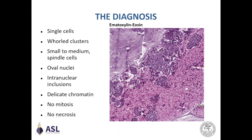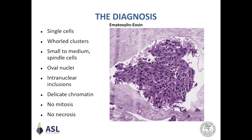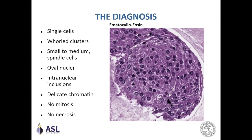Back at the lab, the formalin-fixed material was paraffin-embedded to obtain a cell block. From this cell block, hematoxylin and eosin stained slides were cut. You can better appreciate the architecture of the lesion, composed of monomorphous spindle cells arranged in groups and in whorled configurations. The cells were monomorphous with bland oval nuclei and delicate chromatin. No mitosis and no necrosis were found.